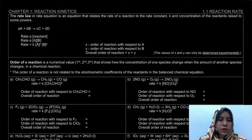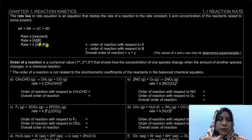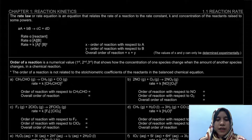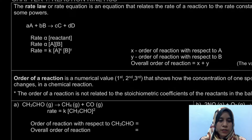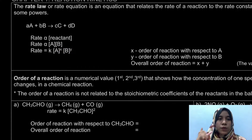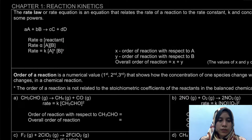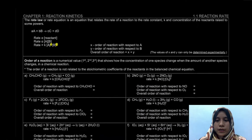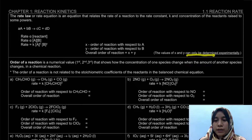So here we have X and Y. What are X and Y? X and Y are actually the order of reaction. The order of reaction does not depend on the stoichiometry. If it depended on stoichiometry, we would have written small a or small b. But no — for the order of reaction, X and Y can only be determined experimentally.